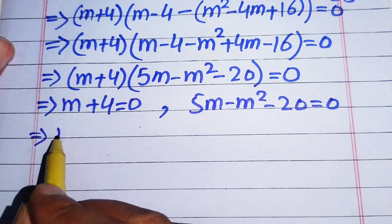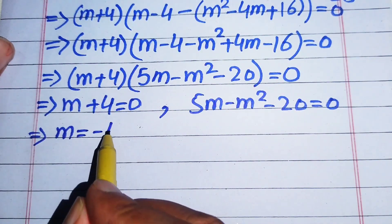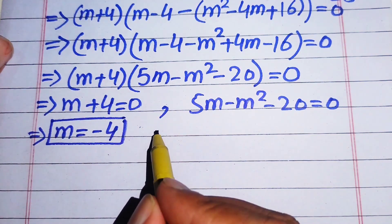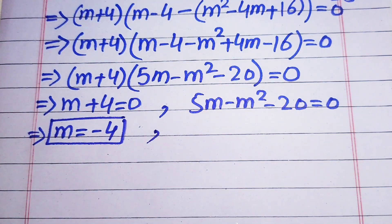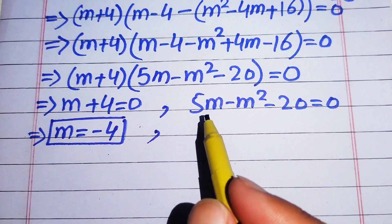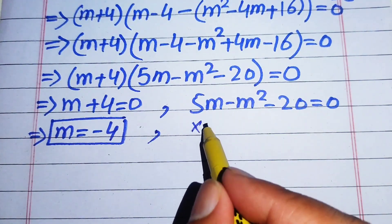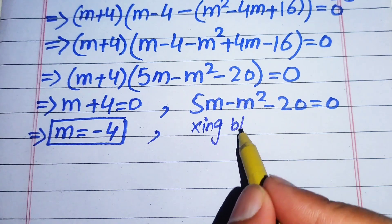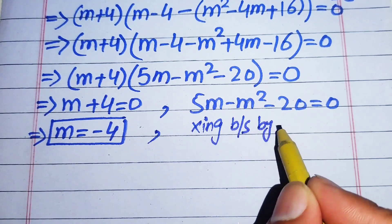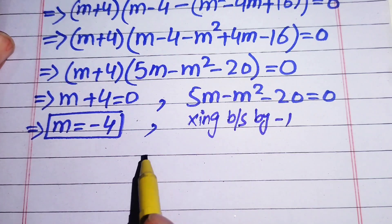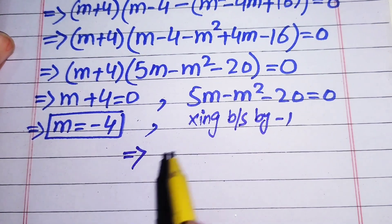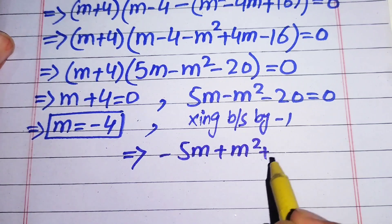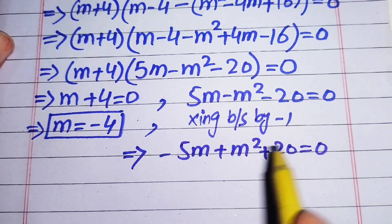In the first case we get m equals minus 4, which is our first real solution. To find the other solutions we need to solve the quadratic equation. We first write it in standard form by multiplying both sides by minus 1, giving minus 5m plus m squared plus 20 equals 0.